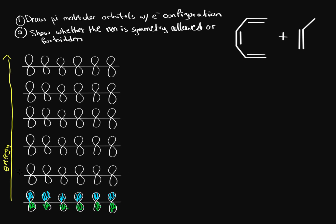The next molecular orbital higher in energy has one node, represented by a dashed line. A node is an area where there is zero electron density. When there is a node, one of the pi orbitals is out of phase — it doesn't overlap properly — giving us one anti-bonding interaction, which is destructive overlap.